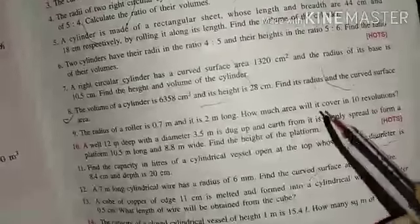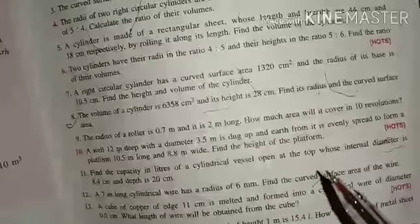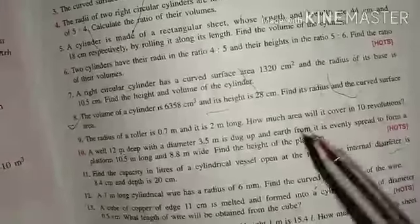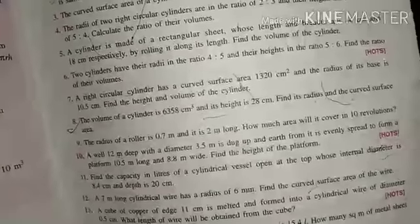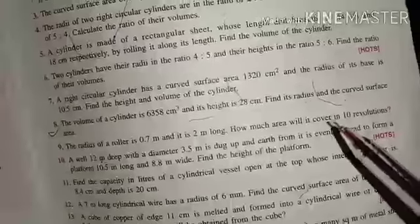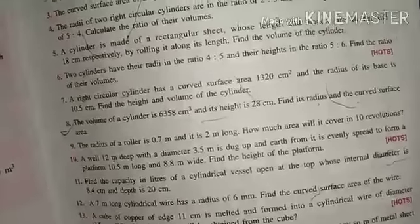Curved surface area of the roller - you know the formula: 2πrh. So just put the value, 2πrh. This will give the curved surface area, the area covered in one revolution. So for area covered in 10 revolutions, multiply by 10.